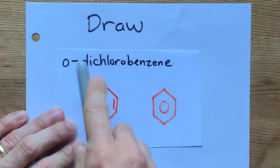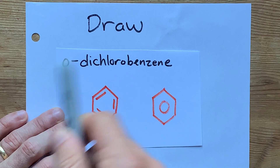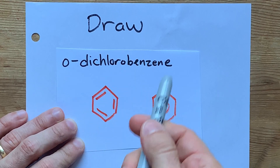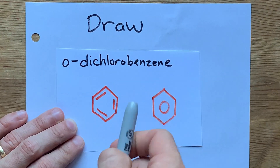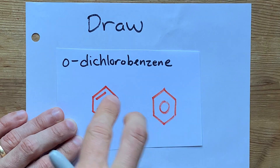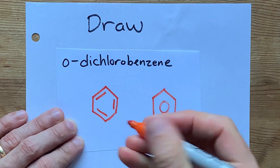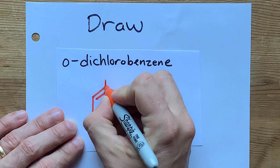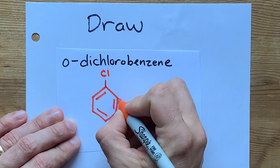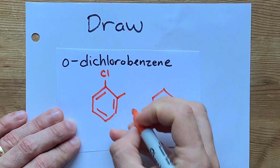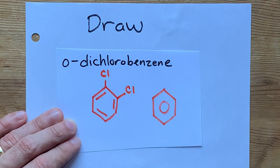Now, ortho means that the two things attached to the benzene are right beside each other. Ortho means if one of them is on carbon one — like I'll draw this chlorine — the next one is one carbon over, just like that.